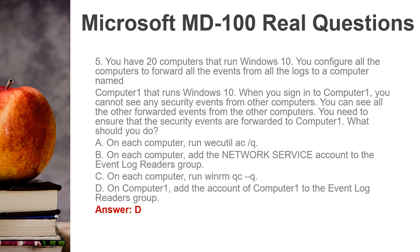Question 5. You have 20 computers that run Windows 10. You configure all the computers to forward all the events from all the logs to a computer named Computer 1. When you sign in to Computer 1, you cannot see any security events from other computers, but you can see all the other forwarded events. You need to ensure that the security events are forwarded to Computer 1. What should you do? A. On each computer, run WecUtil ACQ. B. On each computer, add the Network Service account to the Event Log Readers group. C. On each computer, run WinRM QuickConfig. D. On Computer 1, add the account of Computer 1 to the Event Log Readers group. Answer: D.